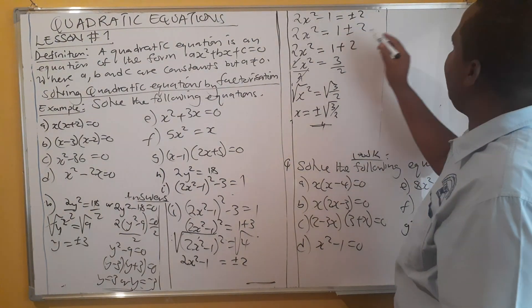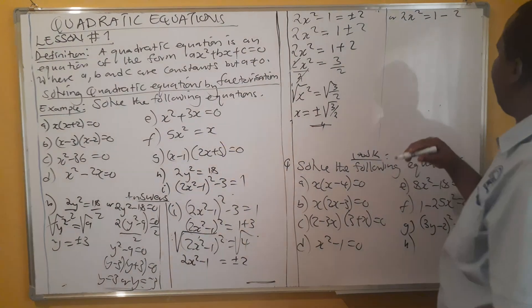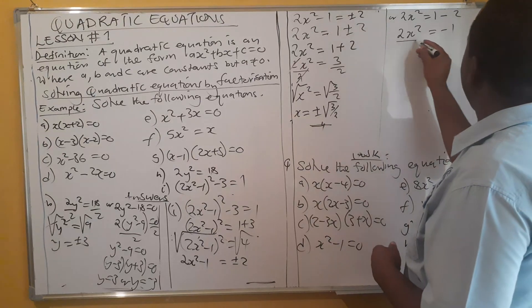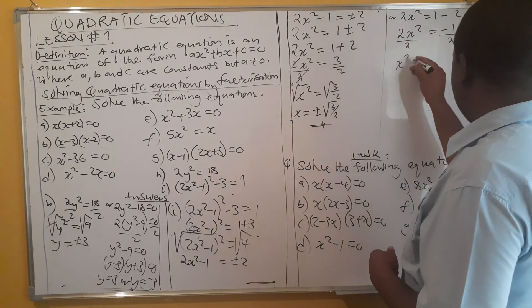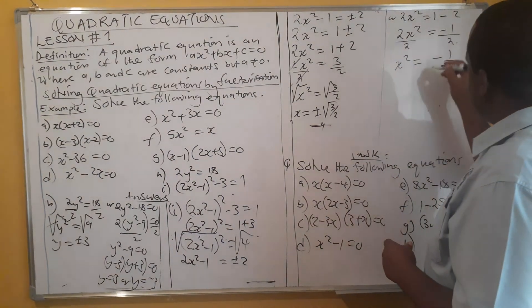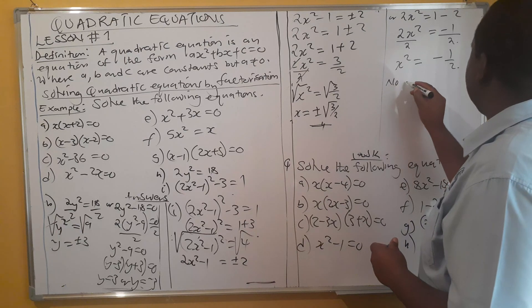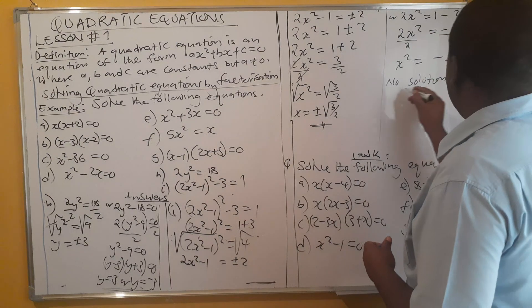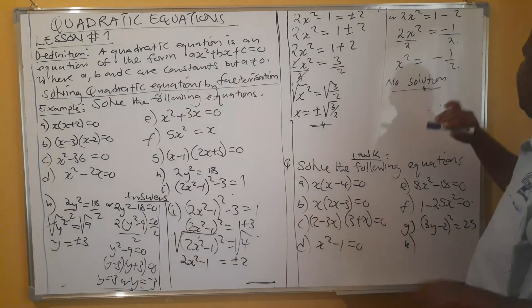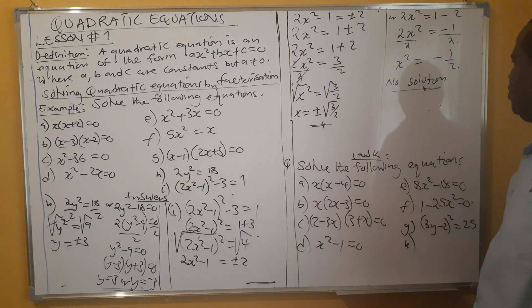Taking the minus case: 2x squared equals 1 minus 2, so 2x squared equals negative 1. Dividing by 2 gives x squared equals negative one half. Because there is a negative under the square root, this part has no solution. At this level, you cannot get a square root of a negative number, so we say it has no solution.